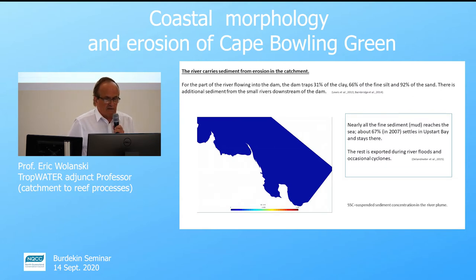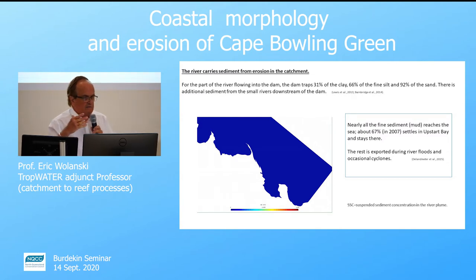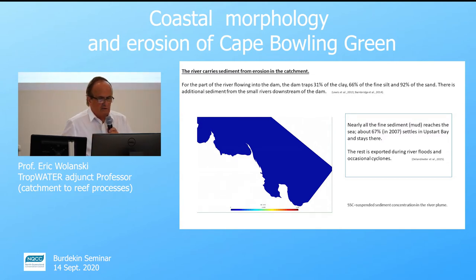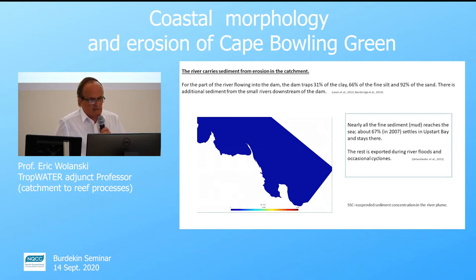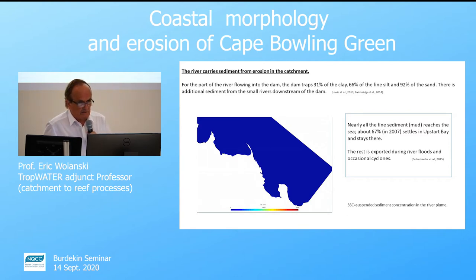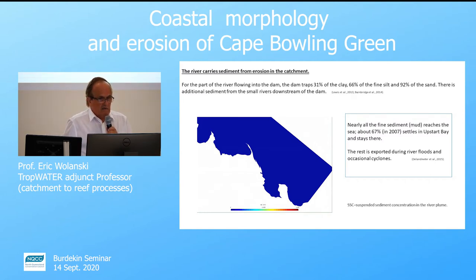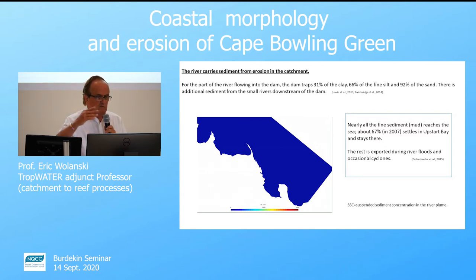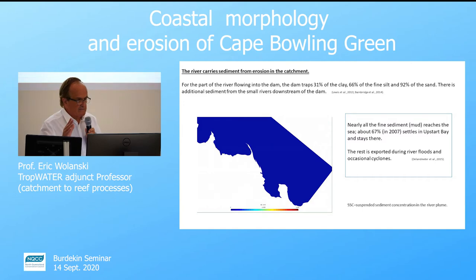The river also carries sediment from the catchment. For the part of the river flowing through the dam, as we heard from Stephen Lewis, the dam traps about 31 percent of the clay, 66 percent of the fine silt, and 92 percent of the sand. There is also more sediment coming from the small rivers downstream of the dam. So let's start with the fate of the fine sediment — the mud.